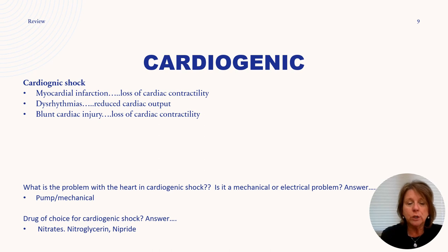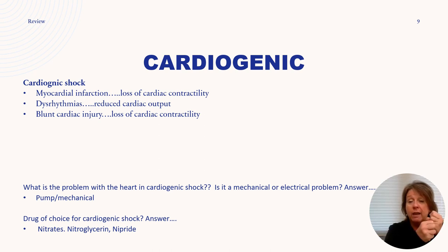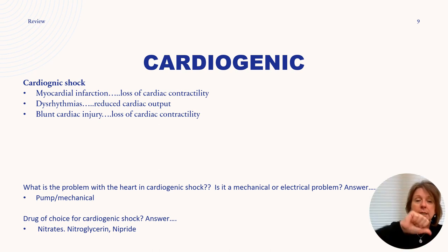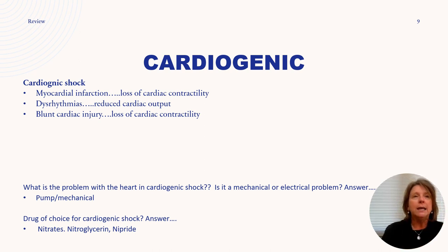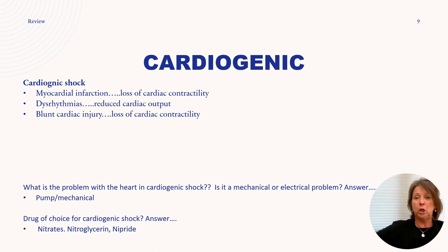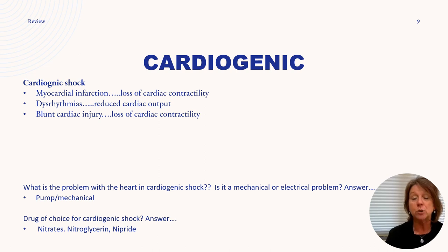The drug of choice for cardiogenic shock is nitrates — nitroglycerin and nitride — which vasodilate. We want to open the vessels to decrease the workload of the heart. If the heart muscle is struggling to pump, we don't want it pushing against resistance. Vasodilation is like opening a bigger doorway so the heart can push blood through more easily.